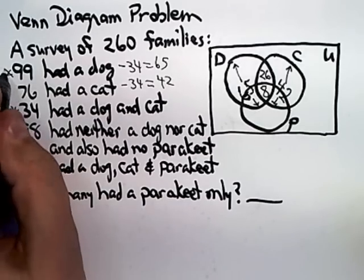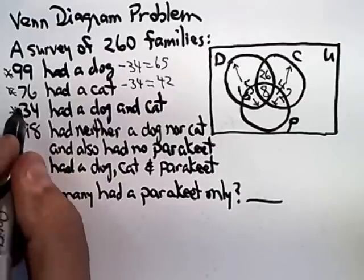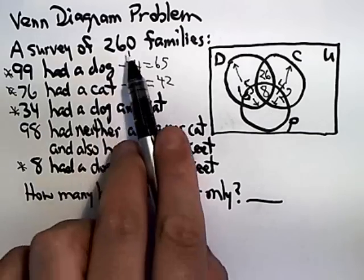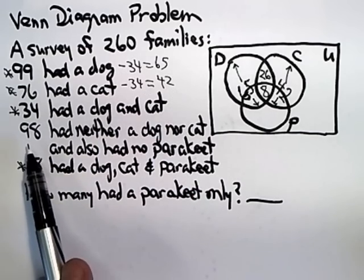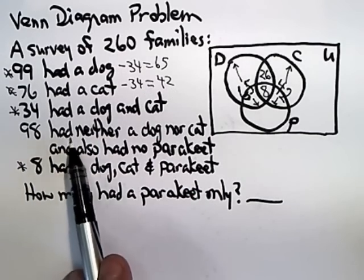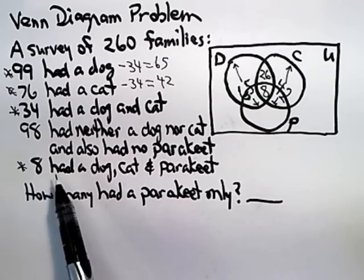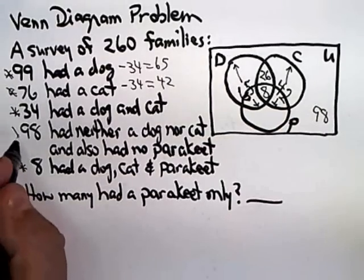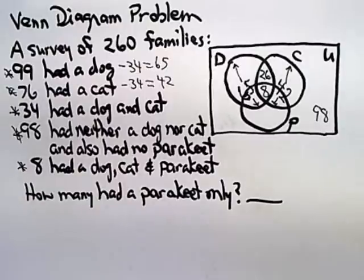So, now I've used this information and I've used this information, and, of course, I've already used everything I've starred. The only piece of information I have not used, other than the fact that there are 260 families, is that 98 had none of the three. So, that gives me a 98 out here, and that's actually pretty easy.